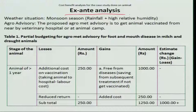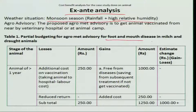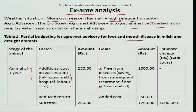As we studied in the case study, during the monsoon season there is rainfall and high relative humidity, and viral infection occurs, as a result the animal gets foot and mouth disease. The agro advisory is to go to the animal veterinary hospital and get vaccinated for this disease. This was analyzed critically for animals of more than one year. The additional cost on vaccination, taking the animal to the hospital, and labor cost is only 250 rupees. So the total cost is 250 rupees.